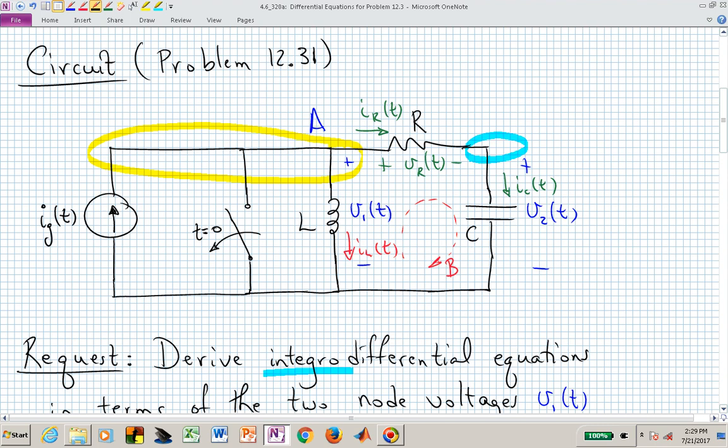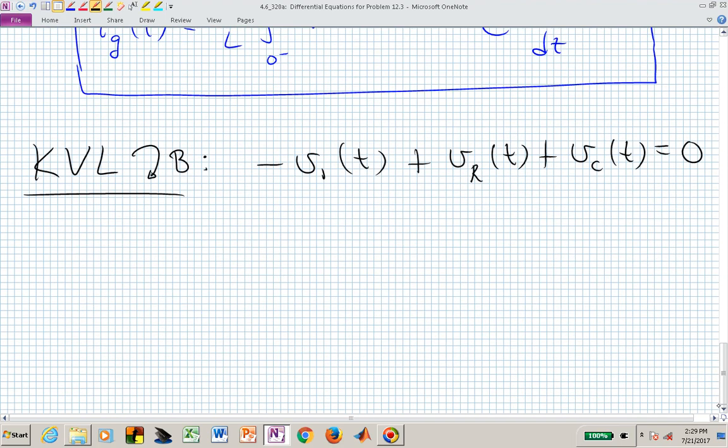And the current through that resistor, I sub R, is the same as I sub C. And we can write I sub C from ICE in terms of V sub 2 of T. Let's then do that. We'll leave V sub 1 alone. We now have minus V1 of T plus R, but now that's times I sub R, but I sub R is I sub C, which is C, D V sub C, but V sub C is V sub 2, plus V sub 2 of T, equaling zero.